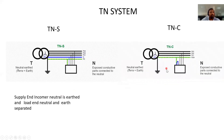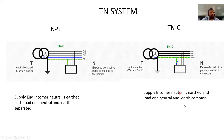In the TNC system, the supply side is earthed, and on the load side the neutral and earth conductors are combined into a single conductor. This combined earth-neutral arrangement is called the TNC system.